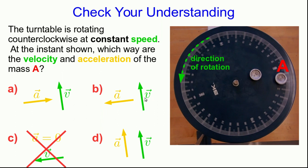Also, if the acceleration pointed in the direction of the velocity, then this object would be speeding up. But it isn't — it's going at constant speed, so it can't be d.